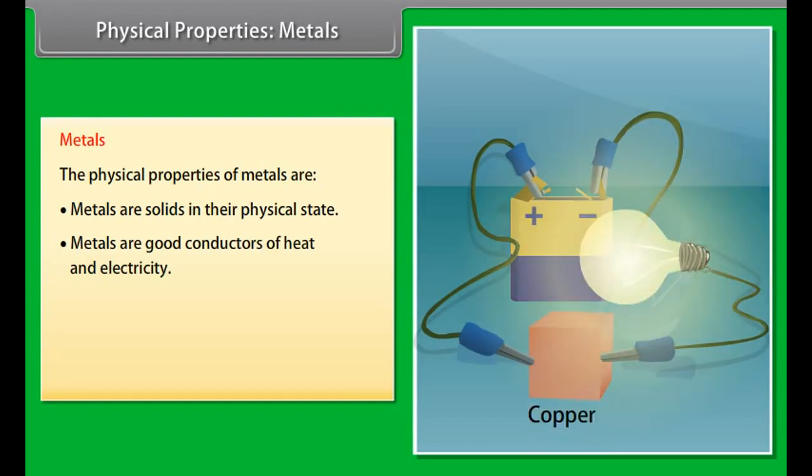Good conductors of heat and electricity. Metals are good conductors of electricity as they have free electrons. For example, silver and copper are the best conductors of heat and electricity, whereas lead is the poorest conductor of heat.